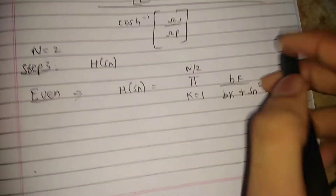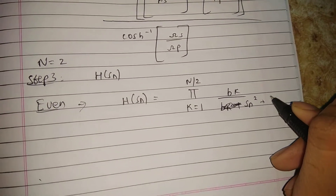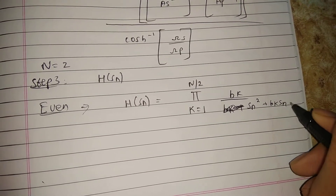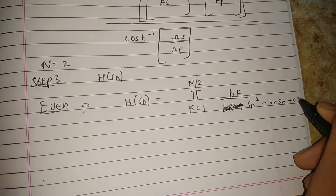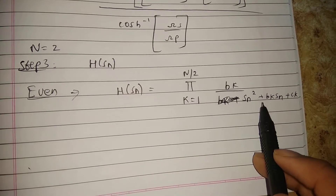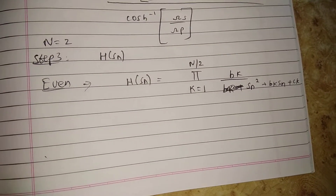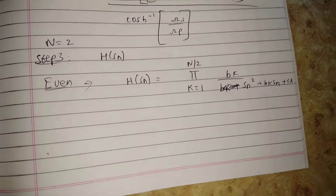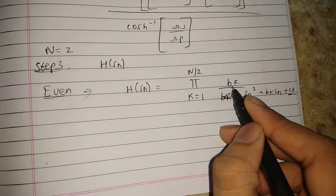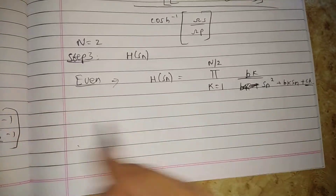For even n, H(sn) equals the product from k=1 to n/2 of: b_k divided by (s_n² + b_k·s_n + c_k). You need to find the values of c_k and b_k to complete this formula.